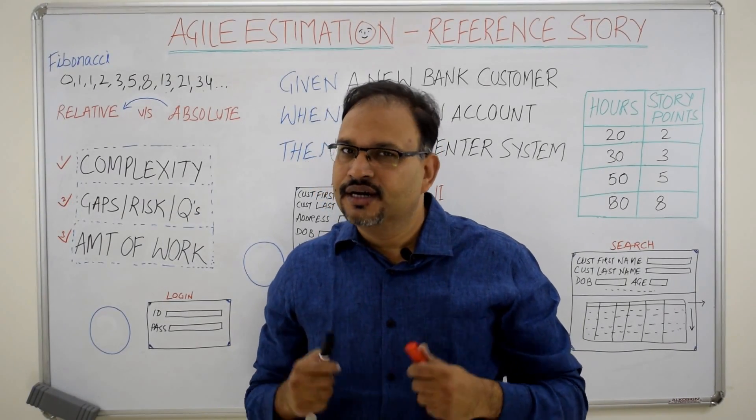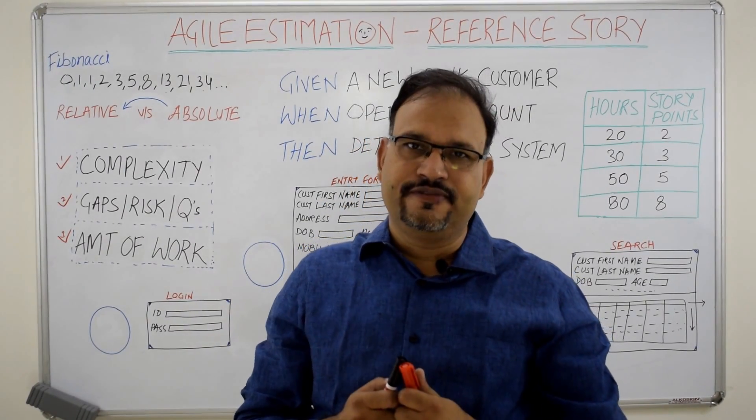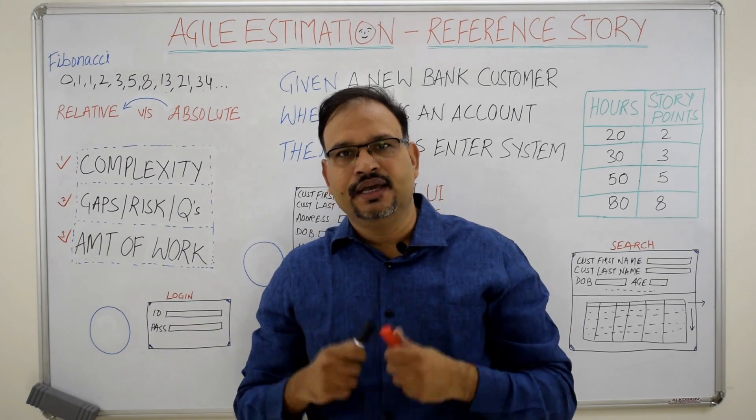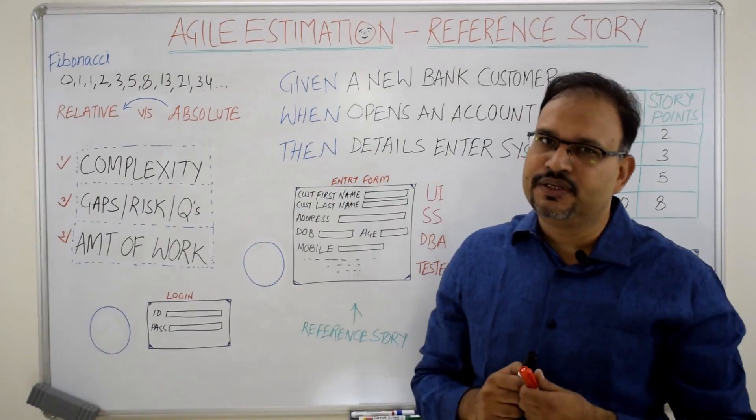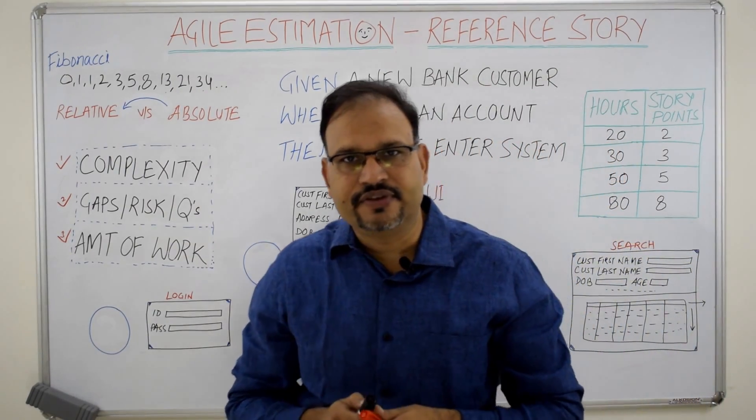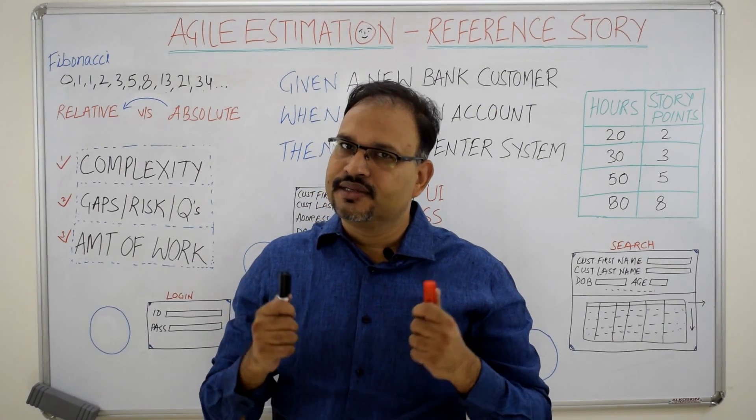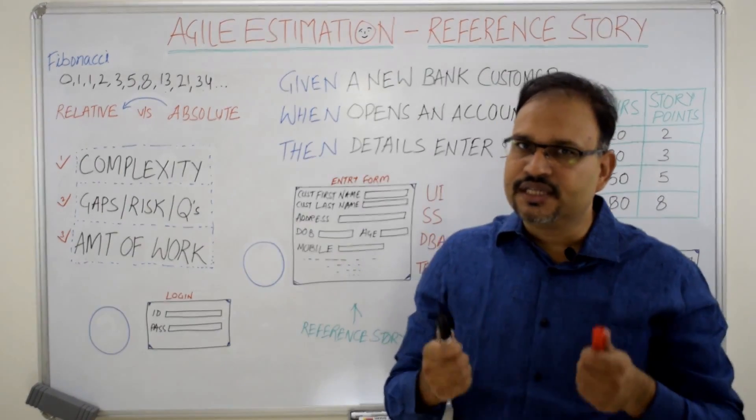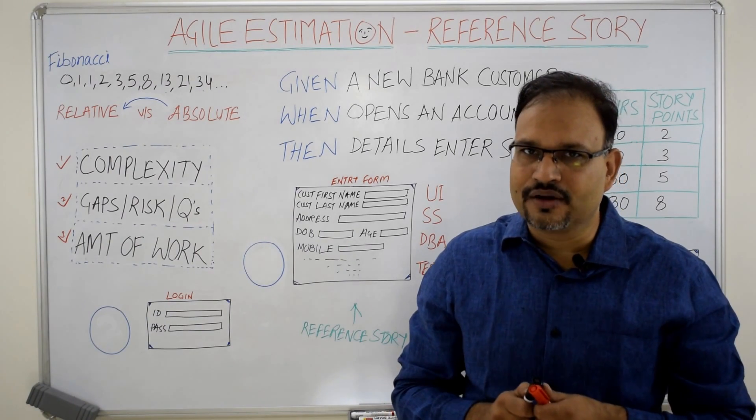Hi there, this is Ajit here. I am going to talk about the role of a reference story in Agile Estimation. What is a reference story? A reference story is one of the simple stories in the product backlog which is estimated very first time by the scrum team and assigned a story point so that this story can be used to estimate rest of the stories in the backlog.